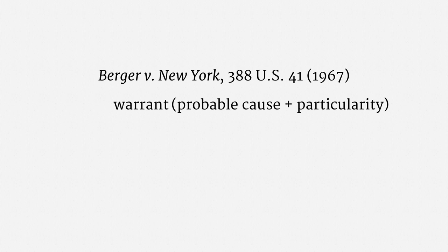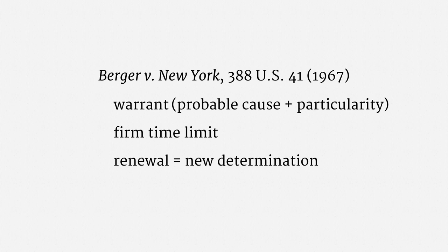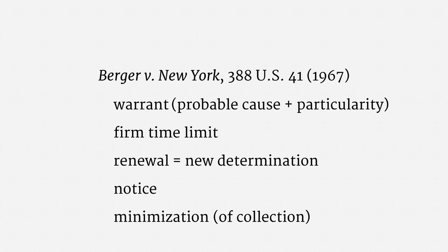In addition to a warrant, the Berger opinion suggests other requirements. They include a firm, relatively short time limit for the wiretap that doesn't leave discretion to officers. Another requirement is that to renew a wiretap, there has to be a new determination of probable cause and particularity. The Court also indicated that individuals who have been wiretapped must eventually receive notice. Finally, the Court called for minimization of wiretaps — if police are listening in and a conversation isn't pertinent to their investigation, they have to stop listening. This minimization of collection is distinct from how minimization functions in the foreign intelligence context, where it works very differently.